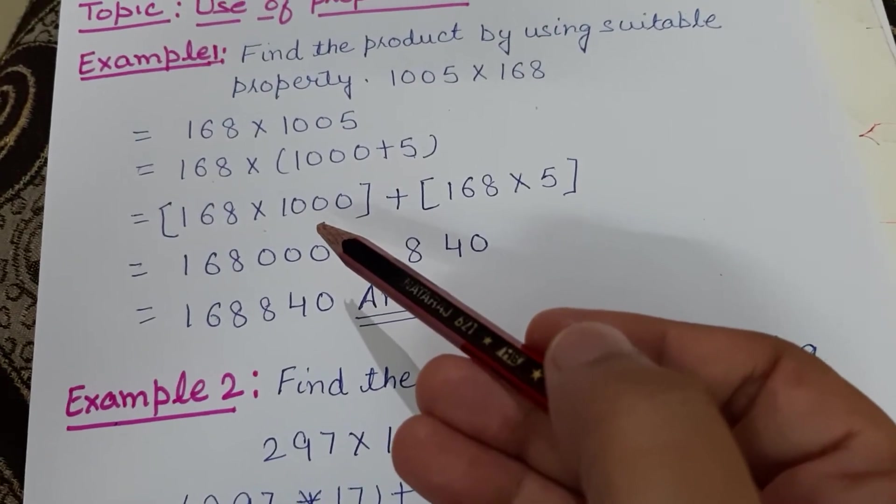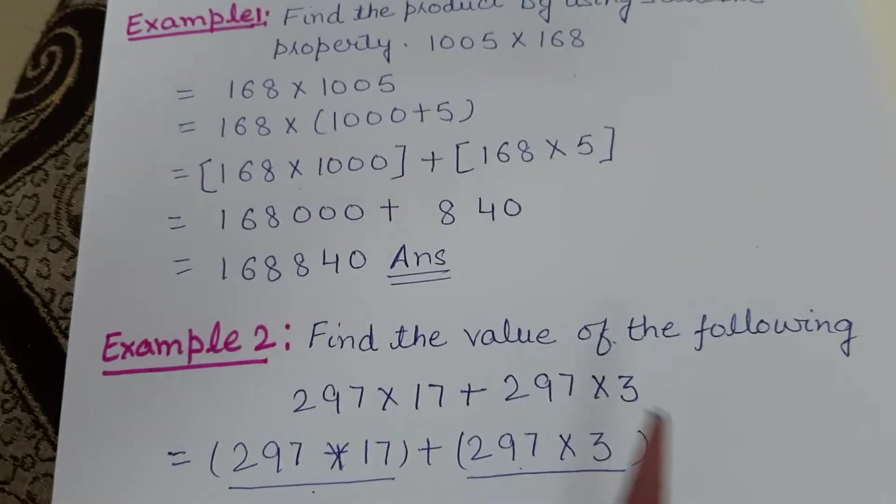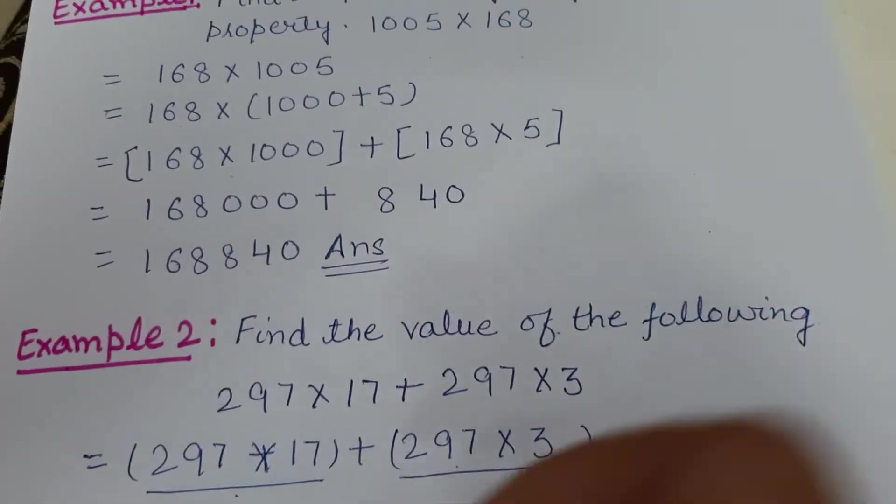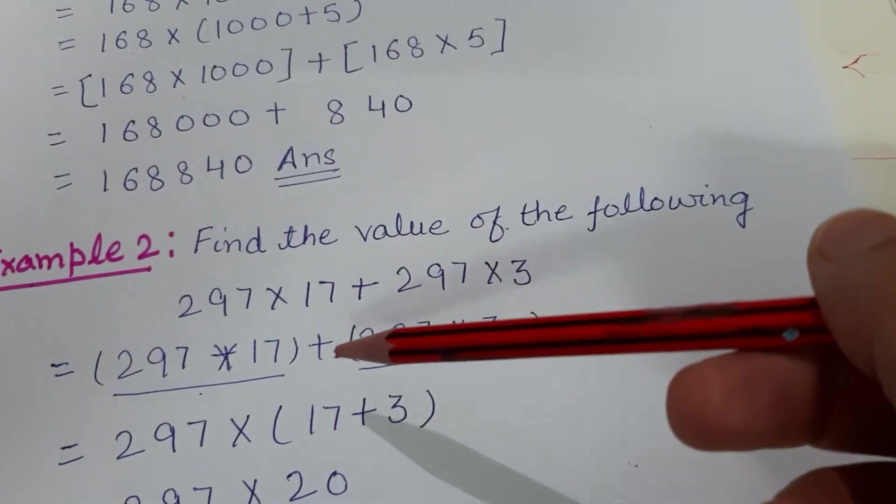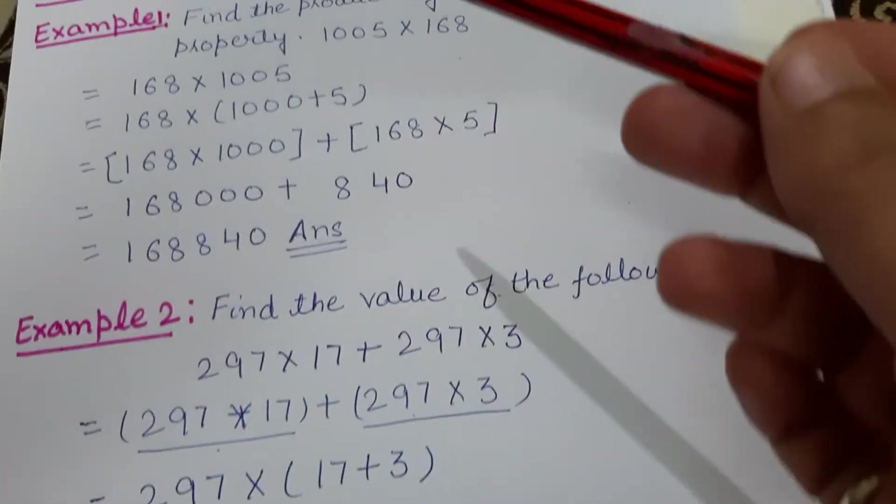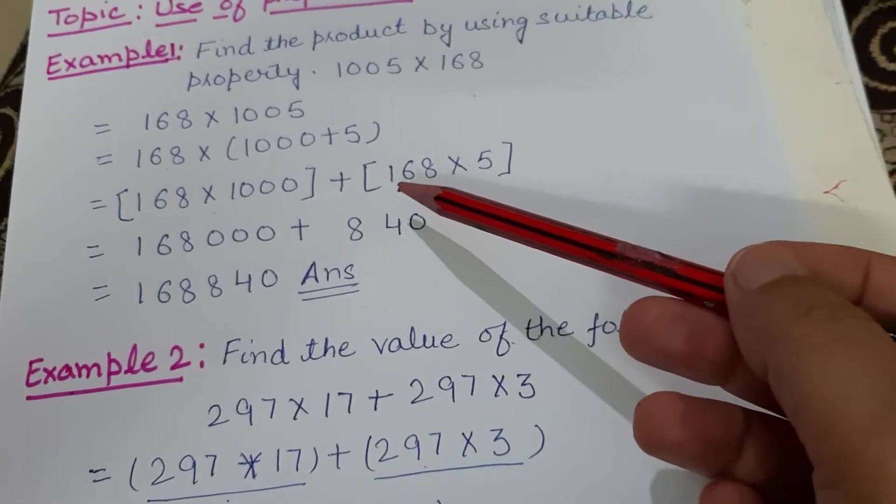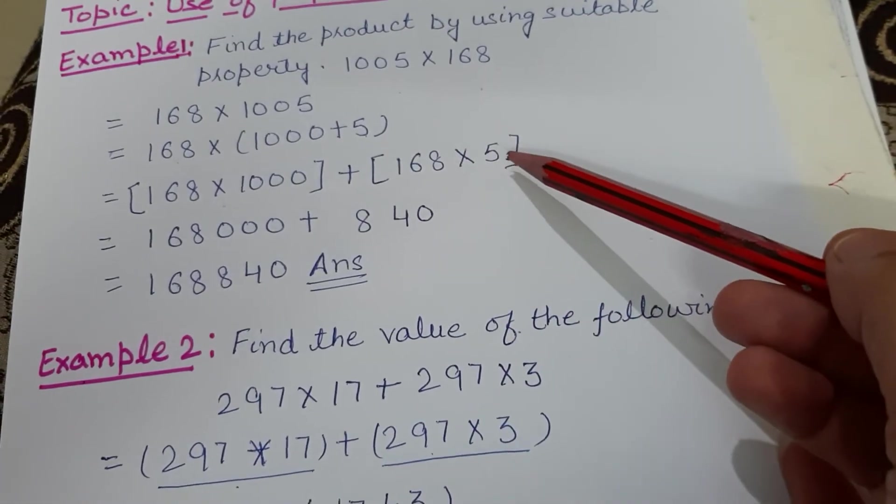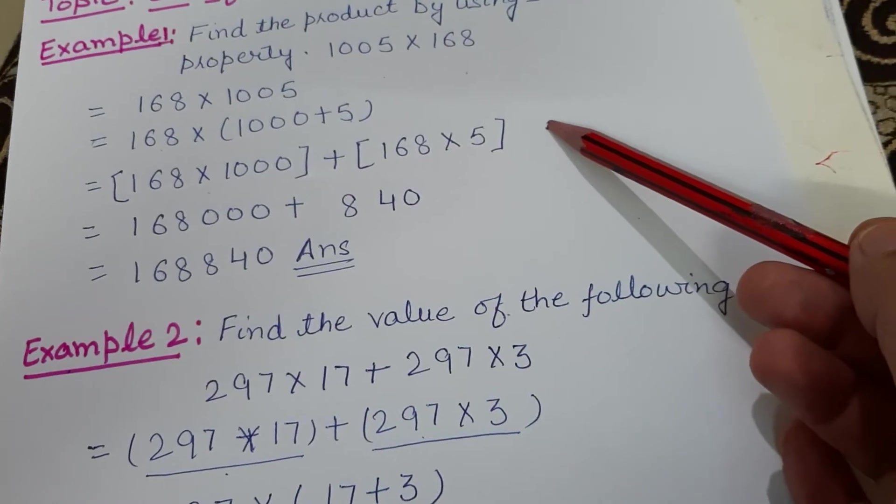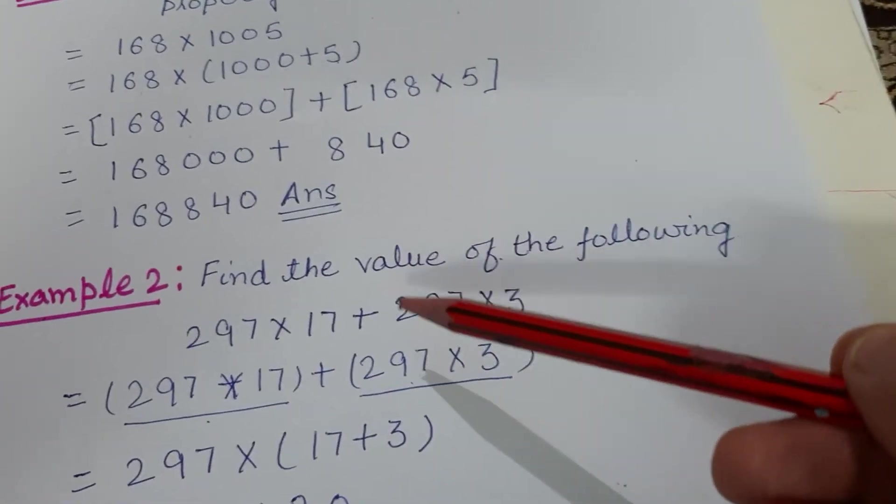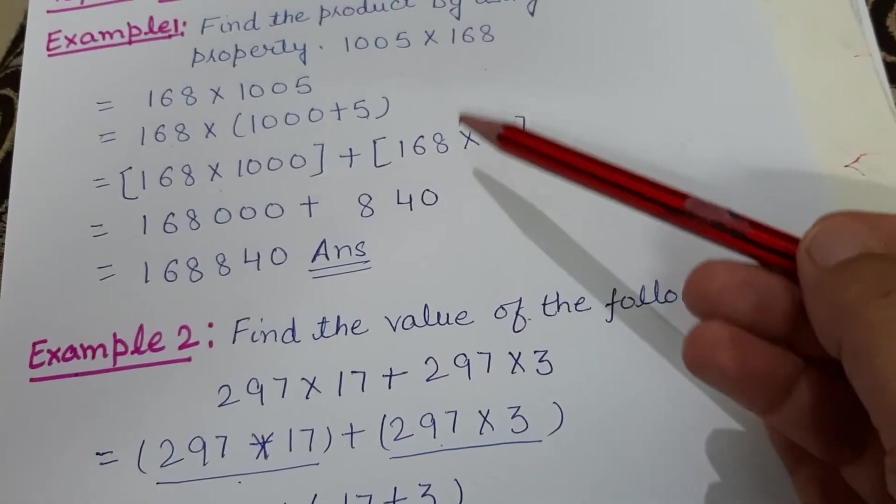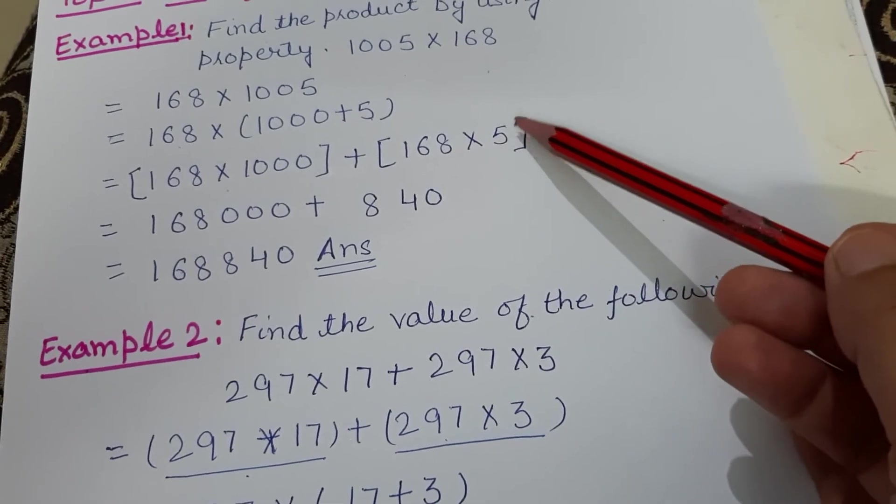It's very interesting to do. The next type I am taking—actually in your book this sum is given first, but I think first you should do these sums so that you are aware of this step. Now, if you see, in this sum this step is given.